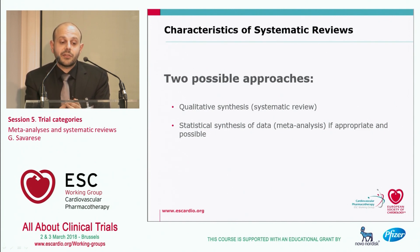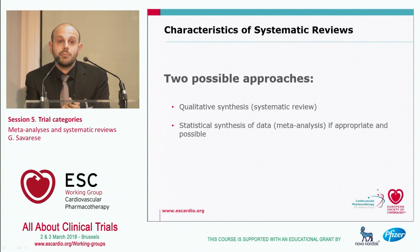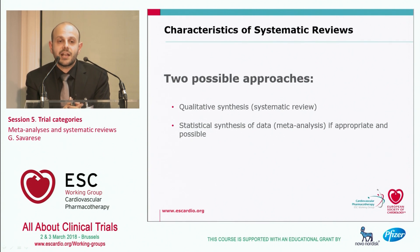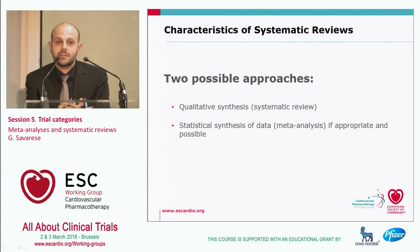A systematic review is characterized mainly by a qualitative approach, meaning that we describe all the studies published on a particular topic. Sometimes we are able to pool the results from all the studies using particular statistical methods. In this case, we say we perform a meta-analysis, so we have both a qualitative and a quantitative approach.